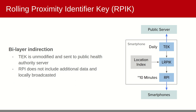This modification is perhaps more clearly illustrated here, where we can see the new location-based RPIK derivation provides location context with bilayer indirection. In other words, both the TEK and RPI are generated and transmitted as before with the original GAEN framework. However, neither contain complete information to derive location.